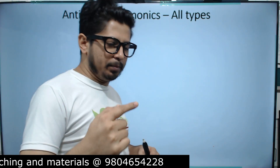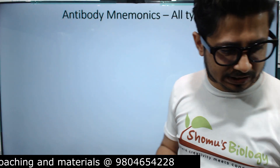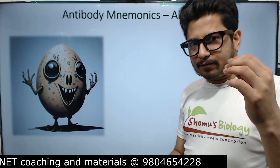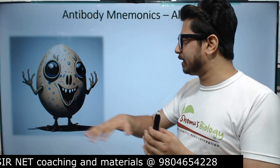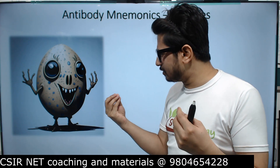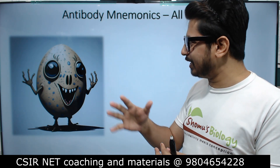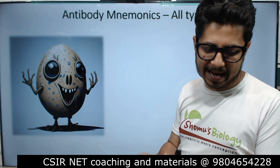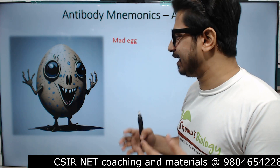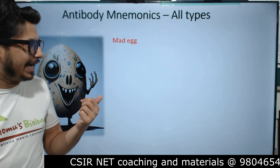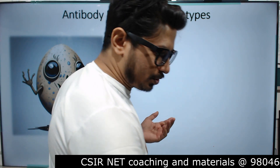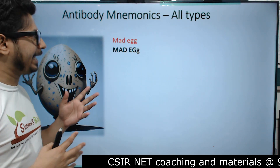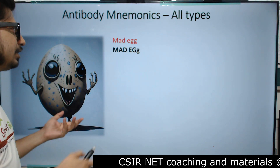Here I'll be talking about the tricks and mnemonics to remember the antibodies of the body. The first thing is all the types of antibodies we're discussing. I want you to remember this particular image — it's basically a mad egg. You can see that this egg is very mad. Remember 'MAD EGG' — M-A-D and E-G, all capitals — these are all the antibodies we are going to talk about.